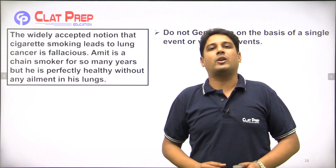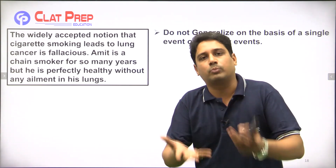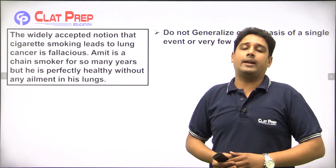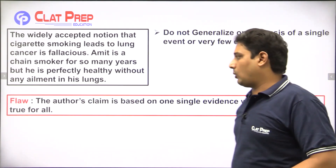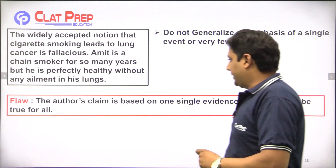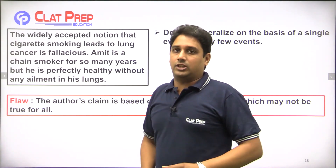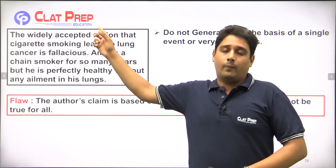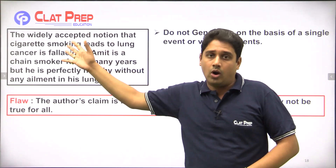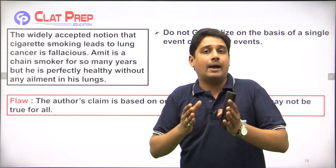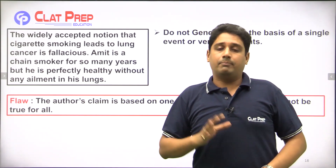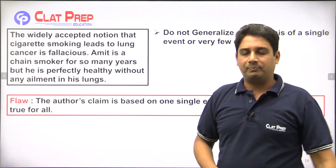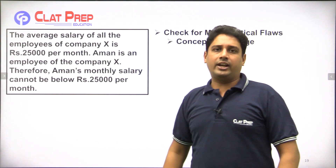So what was the flaw here? The author's flaw is that on the basis of only one single example, they are trying to disprove a widely accepted notion. You don't have a sample size large enough to form a valid conclusion. The author's claim is based on a single evidence which may not be true for all. We have only one example of Amit, so we cannot generalize. This is one flaw.